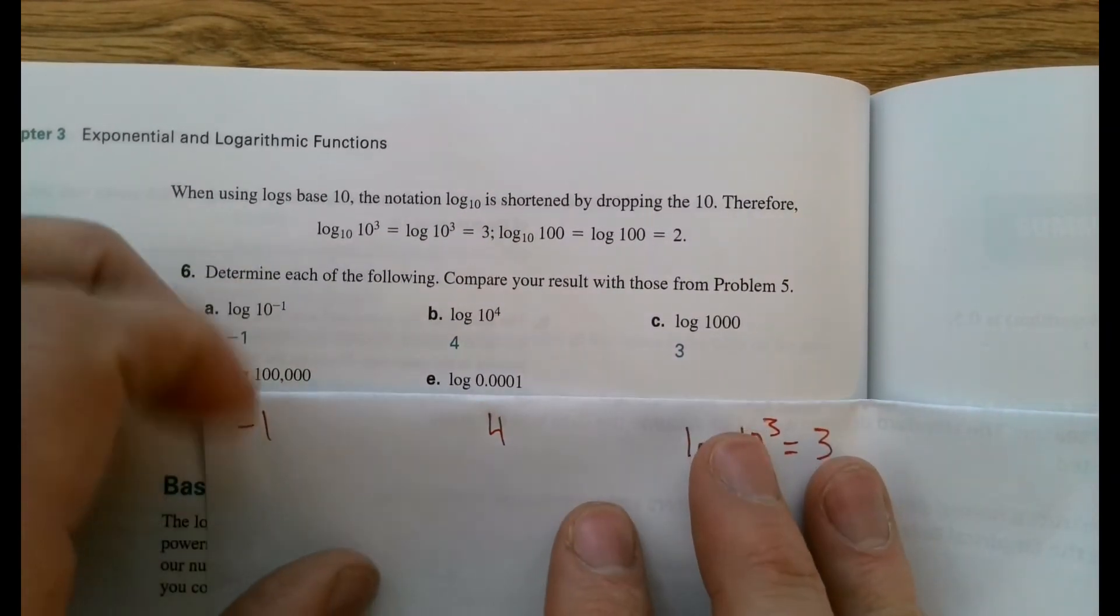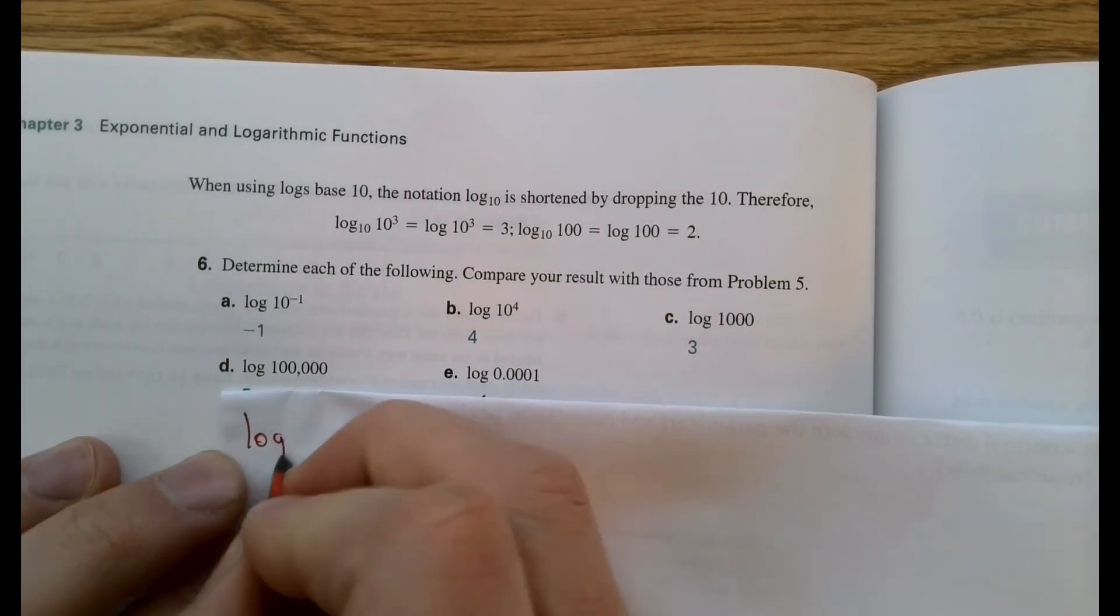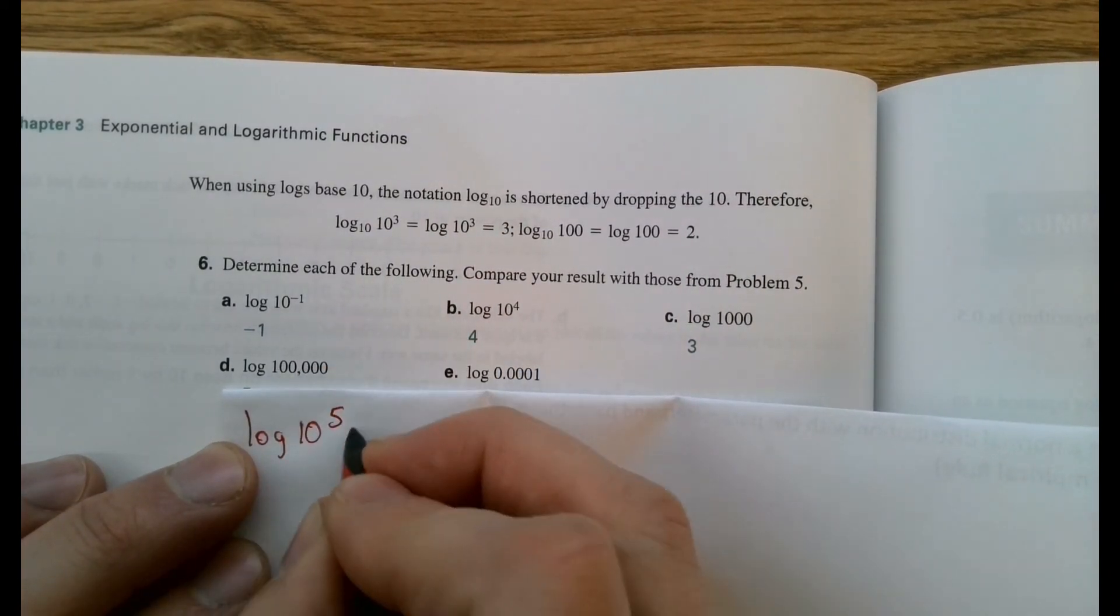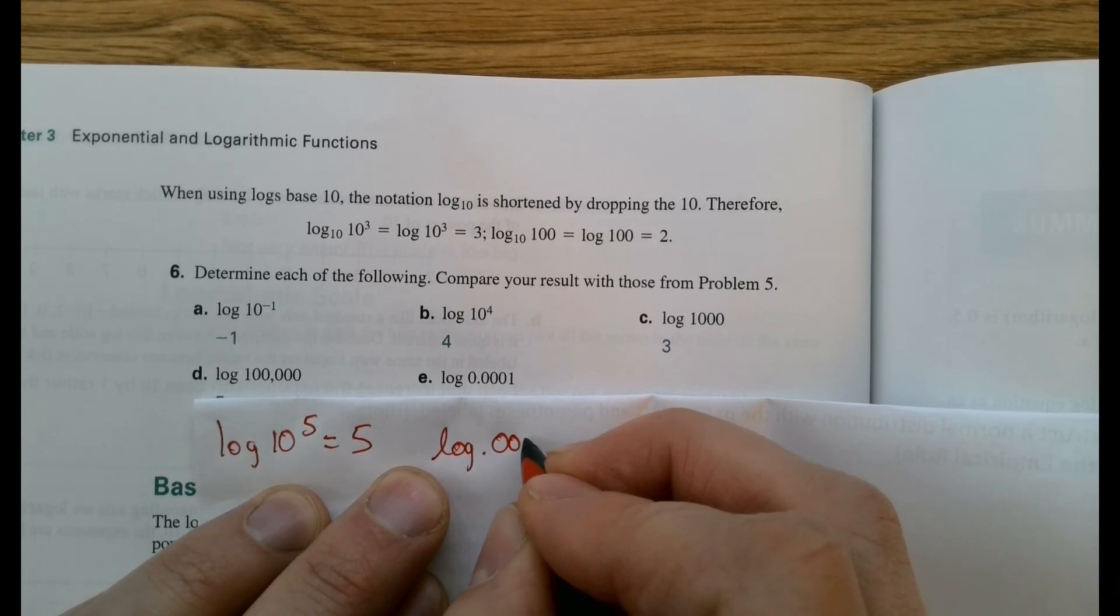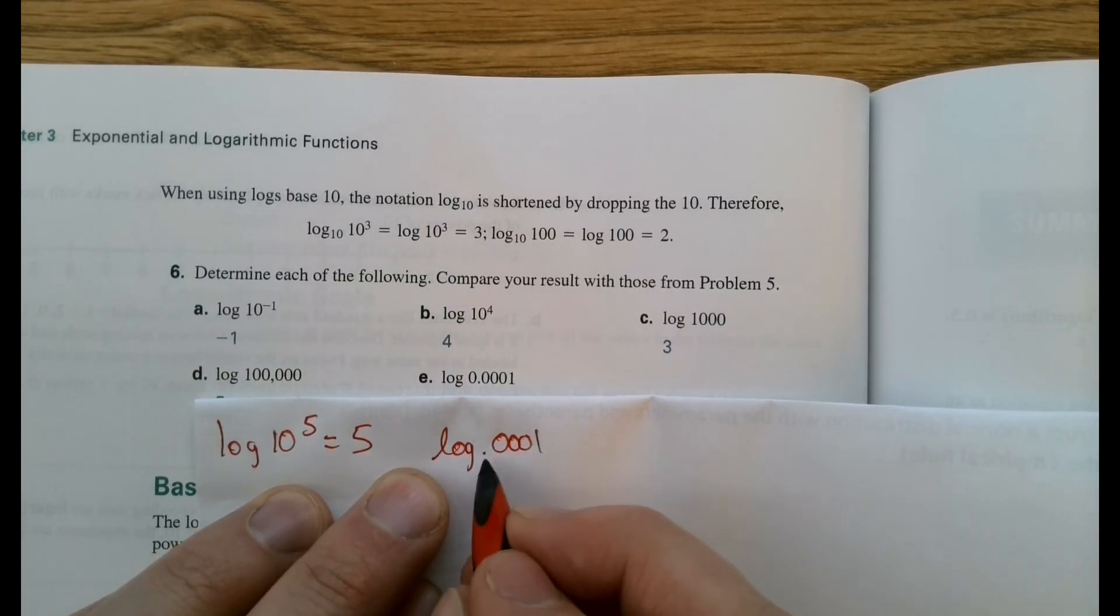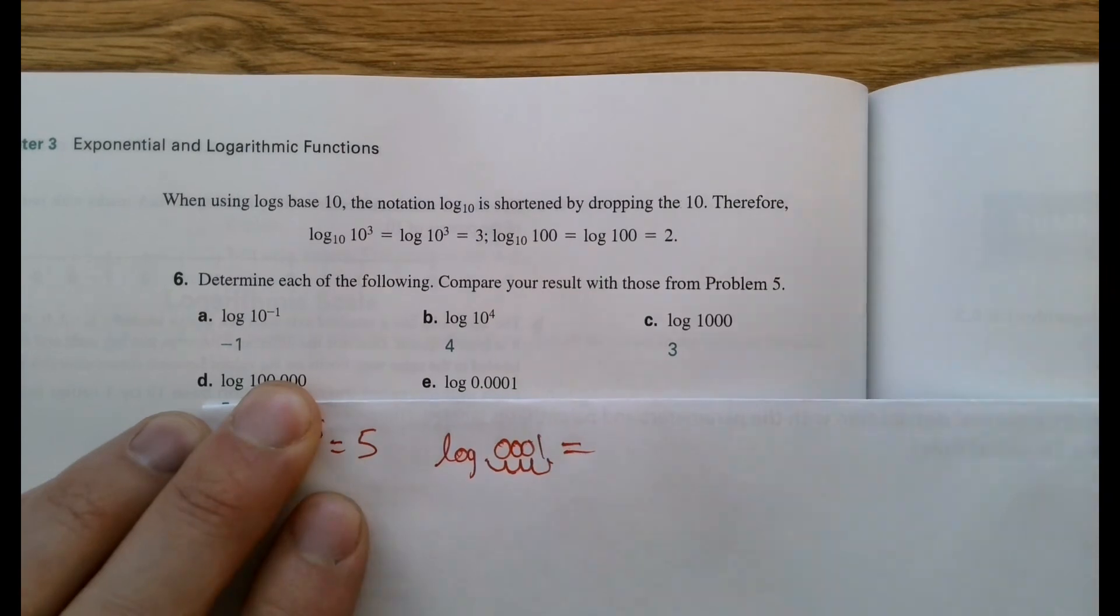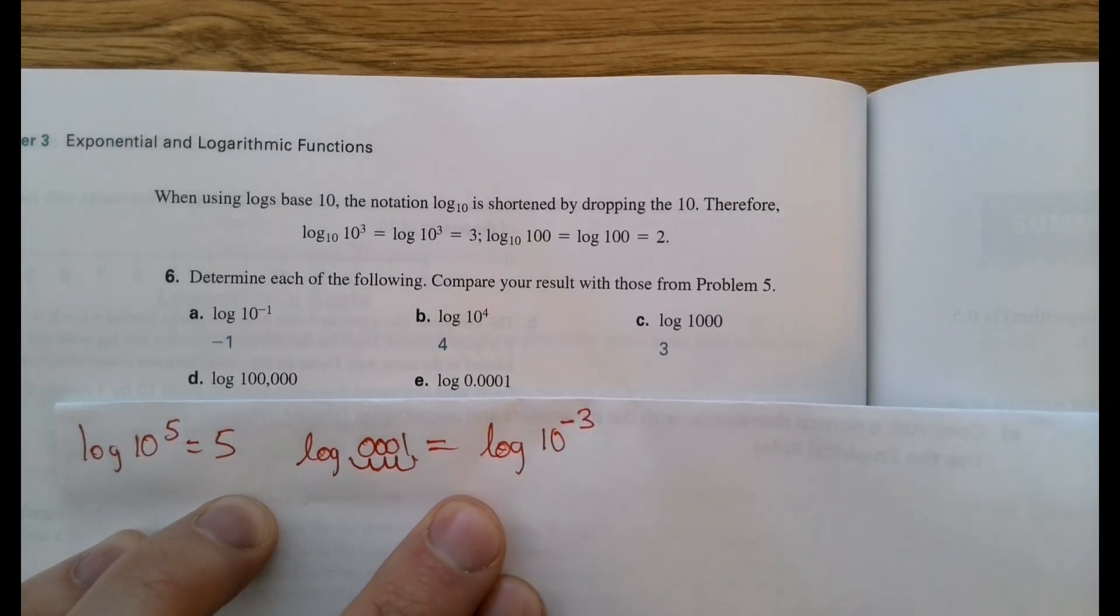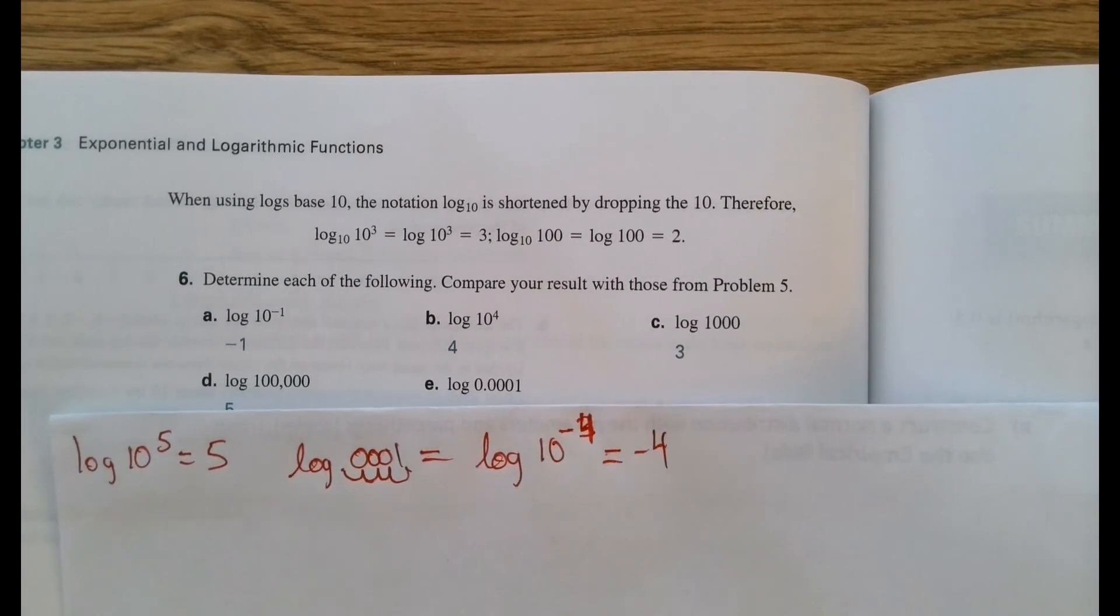And then, last two. That would be log of 100,000. Let's see. How many zeros? 1, 2, 3, 4, 5. That's 10 to the 5th. So this answer is 5. And then, log of this crazy number, 0.0001. How many zeros here, or how many places would we need to move this? 1, 2, 3, 4. So we're going to multiply it by 1,000 in order to turn it into scientific notation, which means we would write this as log base 10 to the negative 3. Let me try again. We should do 10,000, which would be 10 to the negative 4, and our answer is negative 4.